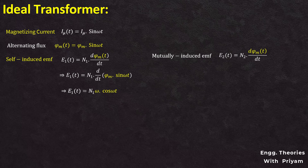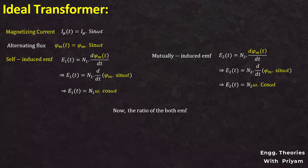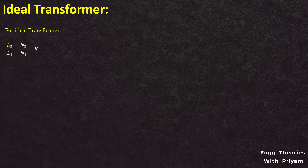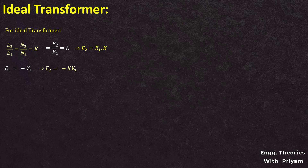The mutually induced EMF e2 is equal to n2 × d(phi_mt)/dt, and substituting phi_mt as phi_m × sin(ωt) gives e2 equal to n2 × ω × cos(ωt). The ratio e2/e1 equals (n2 × ω × cos(ωt)) / (n1 × ω × cos(ωt)), which simplifies to n2/n1, equal to k. This k is known as the voltage transformation ratio, valid for the ideal transformer where e2/e1 = n2/n1 = k. Since e1 = −V1, we can determine e2 as k × e1, so e2 = −k × V1.